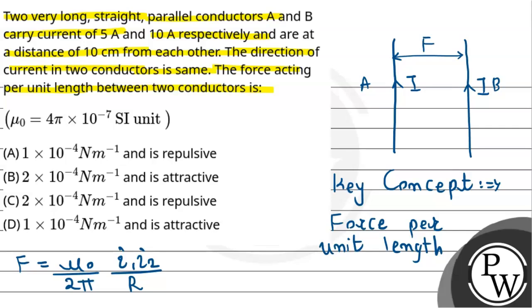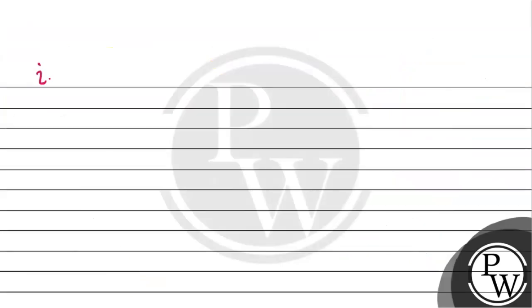So according to the given situation, the distance between the two conductors is capital R which is equal to 10 cm. The currents i₁ and i₂ will be 5 ampere and 10 ampere. R is 10 cm which in meters will be 10 into 10 to the power minus 2. And μ₀ is 4π into 10 to the power minus 7.